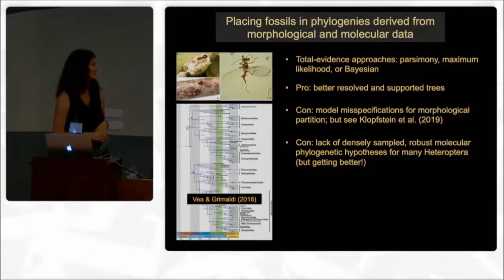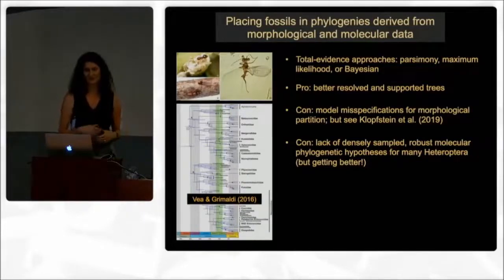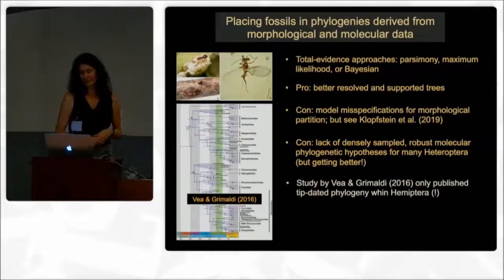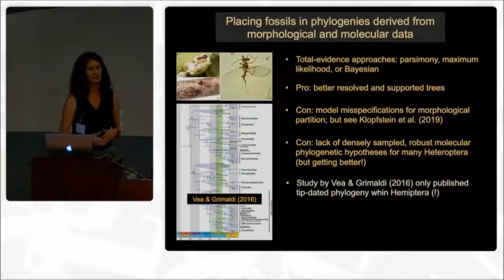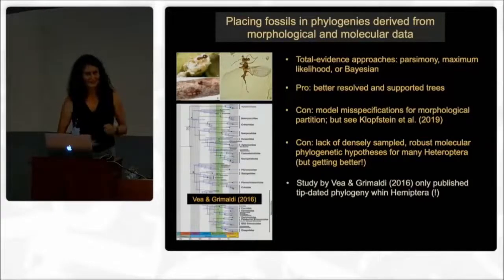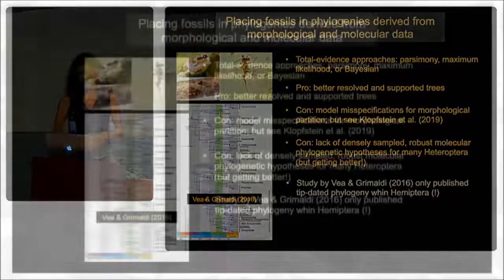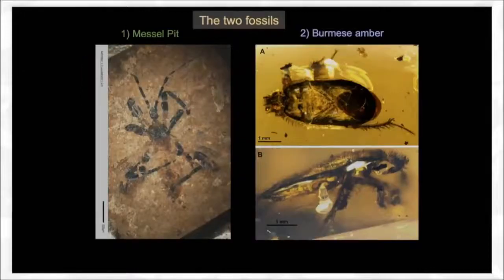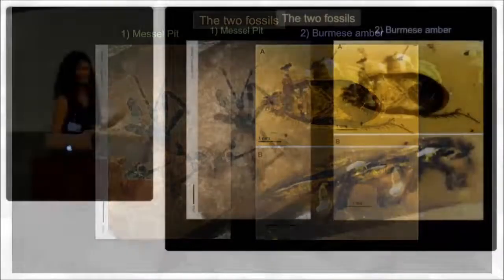A further con is that for many groups of true bugs we're still missing robust molecular phylogenies, though we are getting better. When I searched for studies on Hemiptera that have actually used a combined morphological-molecular data set to place and integrate fossils, I found only one single study — on corcoids, by Veer and Grimaldi, published in 2016. I decided this is not good; we are more modern than that in true bugs and should be trying to change that. So enter the two fossils I'm focusing on for this talk.